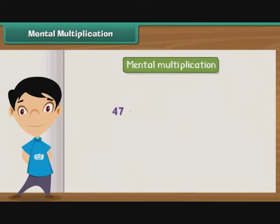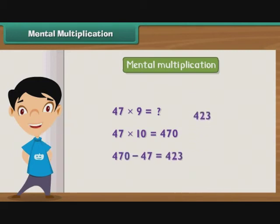For example, to multiply 47 by 9, first multiply 47 by 10 to get 470. Then subtract 47 from 470 to get 423 as the result.